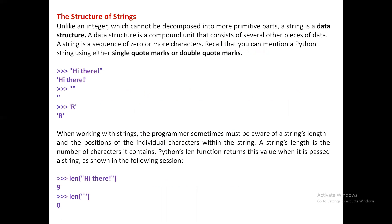Starting with the introduction to strings: a string is a collection of characters, and it is an immutable data object. Immutable means that once the string is created we cannot alter or modify the string contents. If you want to replace a character with another character, that is not possible. If you want to delete a character from the string, that is not possible. Because modifications are not allowed, it is called an immutable data object.